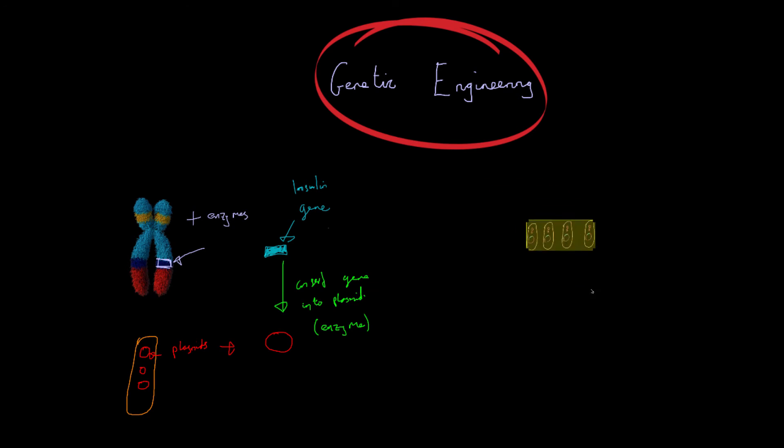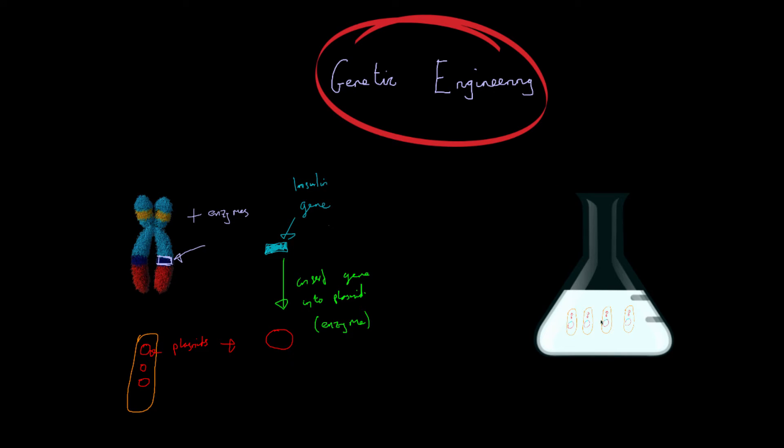And now if we put these bacteria into a flask like so. So our bacteria are now in this flask. We allow them to grow. All of this material here is just growth medium. It allows them to grow. So the bacteria in the flask. Bacteria in flask. That bacteria now has the insulin gene. And so they will start to make insulin just like we would. And so the bacteria produce insulin.